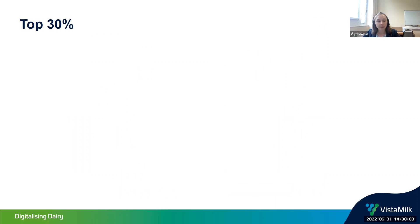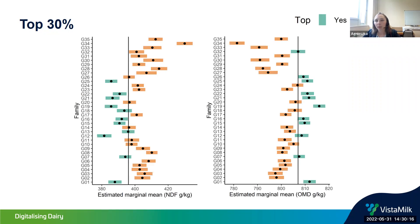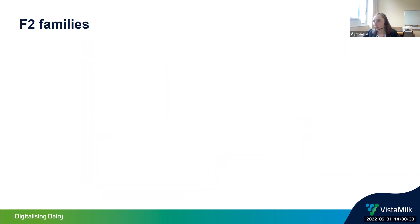I was interested in looking at the top 30 percent of families, putting an artificial threshold to see which plants are in the top 30 most digestible. I then transferred this information to look at F2 families: if an F2 family originates from a family in the top 30 with only one top-30 parent in the mix, the family is marked green; if there are two top-30 parents in the F2 family, it is marked blue.